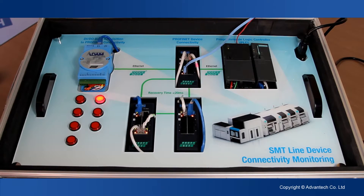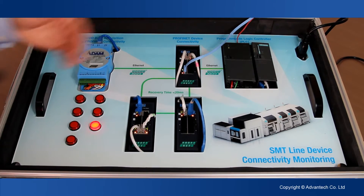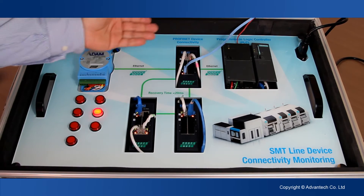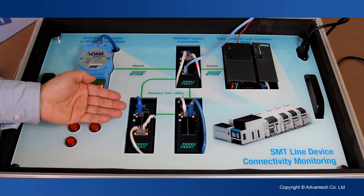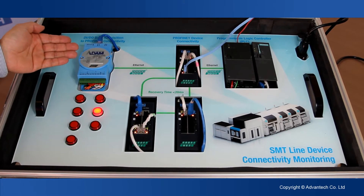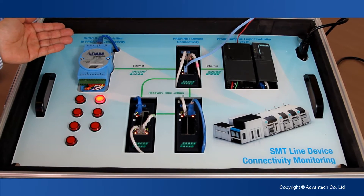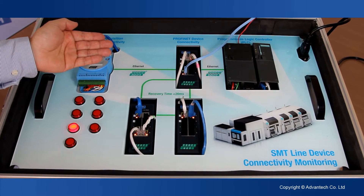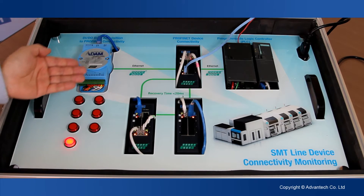Here is our demo box. We want to simulate the production line. First of all, here is our Siemens PLC, combined with our three PROFINET protocol switches. And finally we have the ADEM — this is DI/DO, data acquisition. So it can make the DI/DO become PROFINET Ethernet transmission. And this already shows the data transmission.